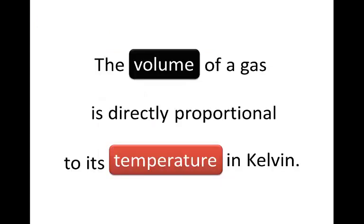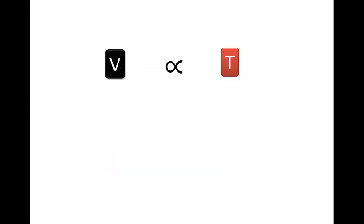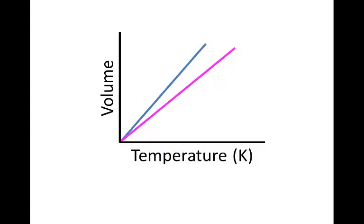Let's put the statement into an equation. Volume is directly proportional to temperature. Whenever two variables are directly proportional to one another a graph of one against the other gives a straight line. These two lines are both straight lines showing that volume and temperature are directly proportional to one another.